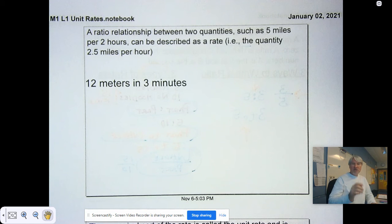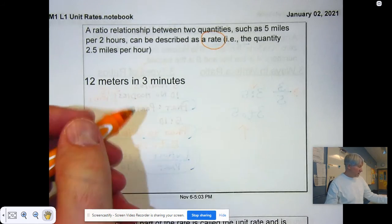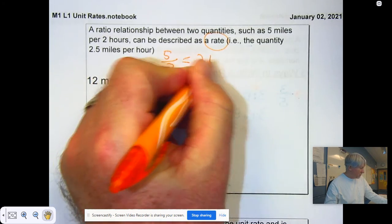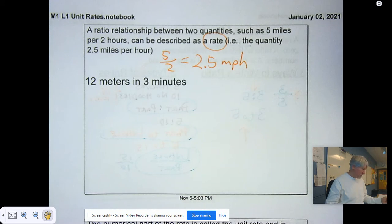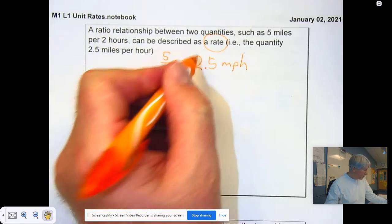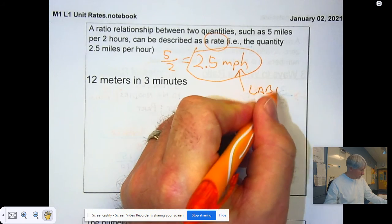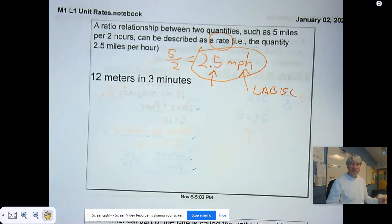So, a ratio relationship between two quantities, such as 5 miles per 2 hours, can be described as a rate. 5 to 2 is equal to 2.5 miles per hour, miles divided by hours. You're going to be asked to write a rate and provide a label. The label is the unit, the rate right in front of you.